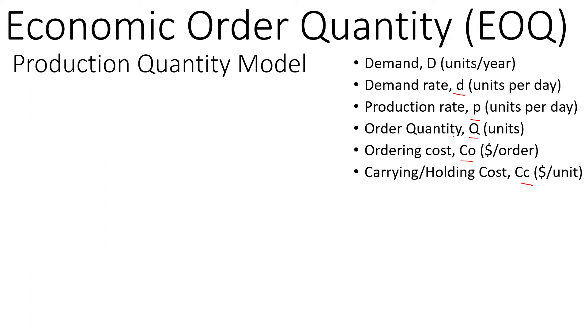If we place a Q amount of order and the production rate is p, then the production quantity model looks like this. We place the order Q, start making the product, finish making the product, it goes back to zero, we start production again, and it continues like this.